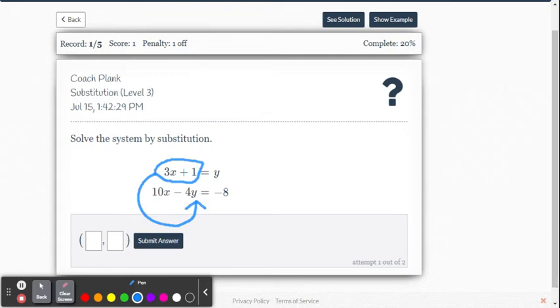So that's our first step. 10x minus 4, and then substitute 3x plus 1 - we replace the y with that, and then equals negative 8. So I just rewrote this equation and replaced that y there with the 3x plus 1.